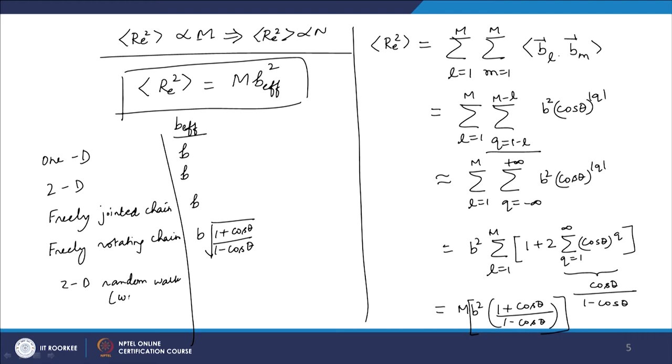Now let us try to see what b and M mean. b_effective is a parameter, but M is also a parameter — the number of segments chosen to represent the polymer chain is a property of the toy model, not a property of the polymer chain itself. So let us look at what b and M represent and how we can use them to represent different kinds of polymeric systems. They are not completely meaningless parameters; they do have certain meaning associated with them.